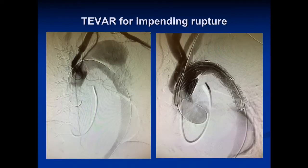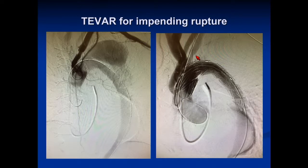Another case: TEVAR for impending rupture. You can see rapid false lumen expansion. The graft goes in across the left subclavian artery — this is where we have our diagnostic catheter — and the false lumen is sealed.